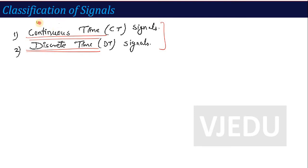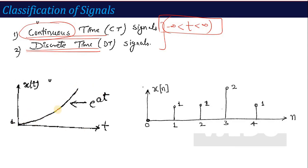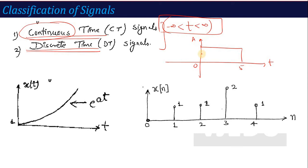What is continuous time? As the name implies, a continuous time signal is defined for each value of time — generally t from minus infinity to plus infinity. If you can define the signal for any value of t, that type of signal is called a continuous time signal. For example, an exponential signal increasing with increasing t, or a signal with amplitude 1 from 0 to 5, are continuous time signals.